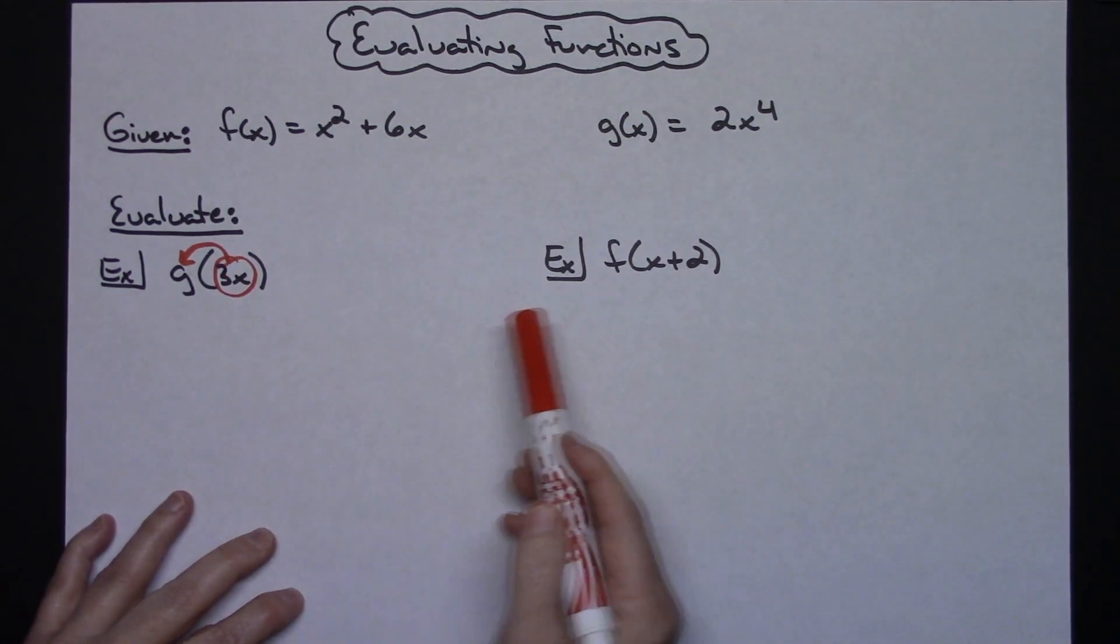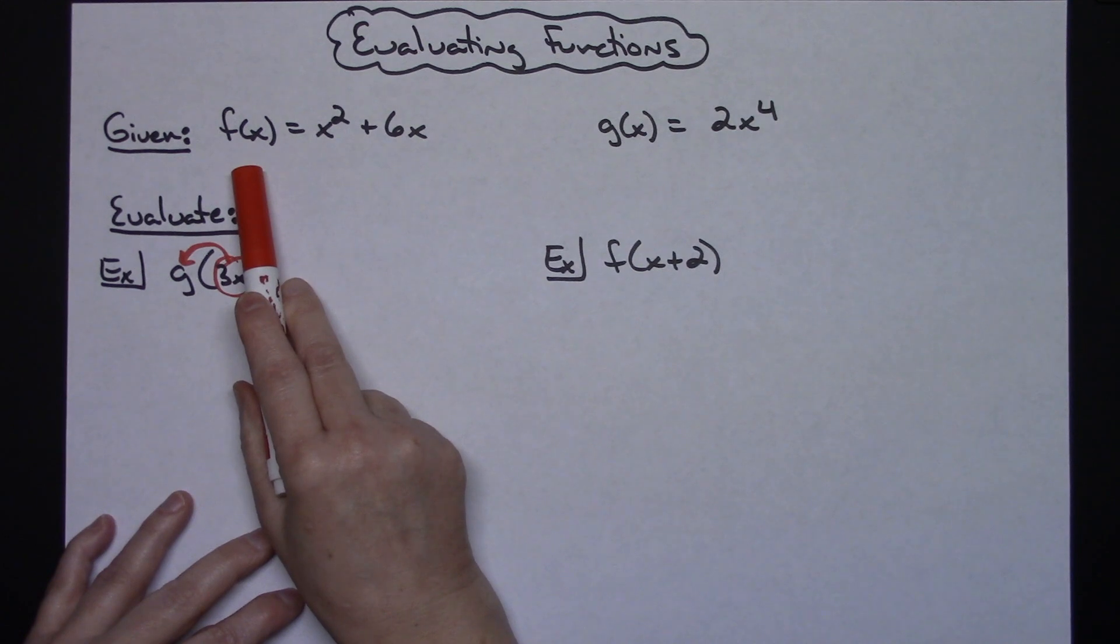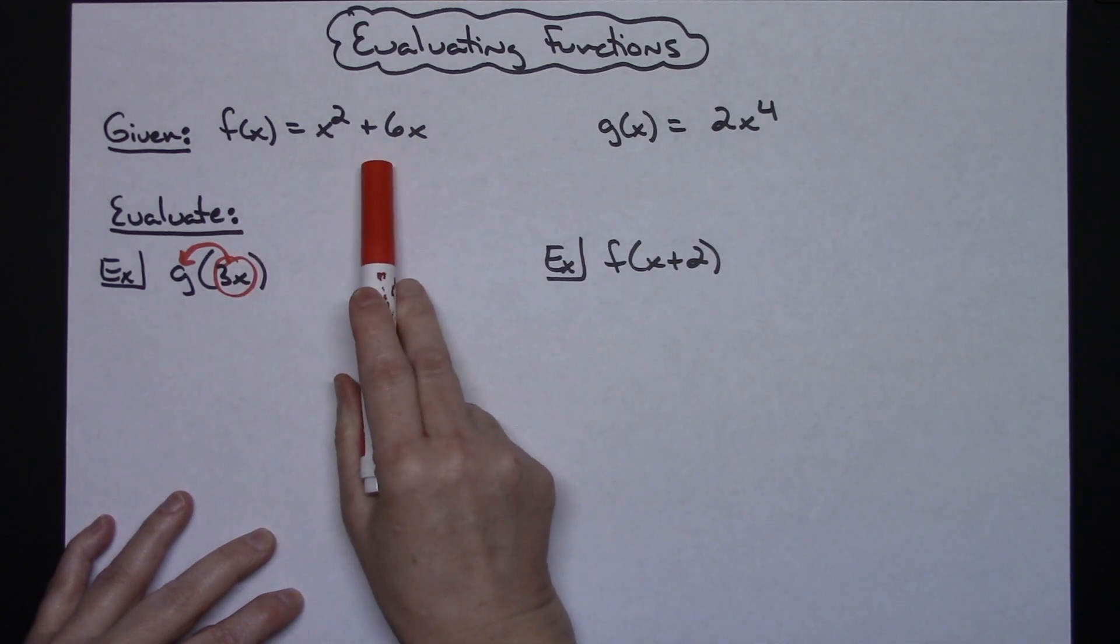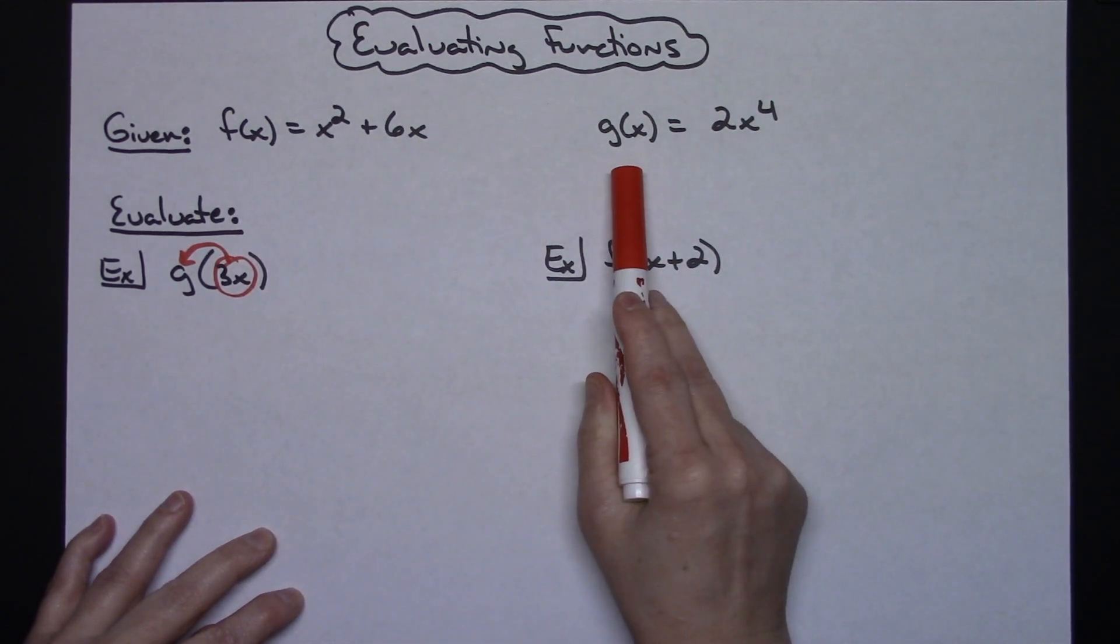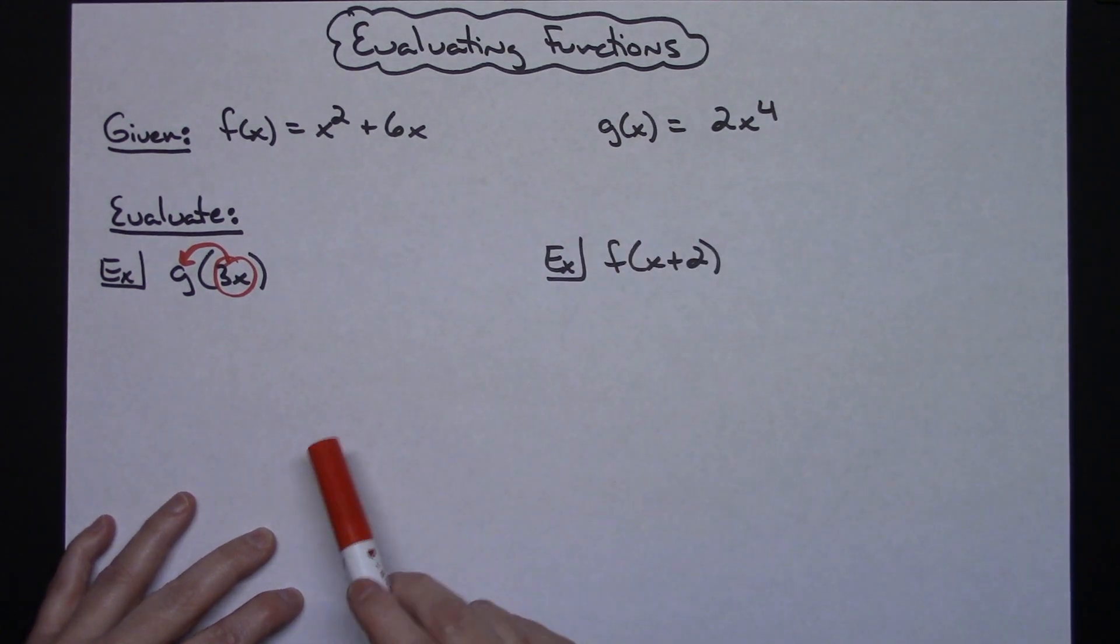In these two examples here, I'm given the f function: f(x) is equal to x squared plus 6x, and the g function which is g(x) is equal to 2x to the fourth.